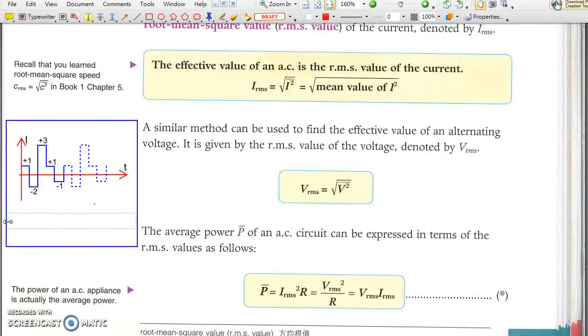The squares of current are positive 1, positive 4, positive 9, positive 1, and positive 1. And thus the average value of the squares of current is 3.2. If each current value lasts for one-fifth of a period, then the root mean square current is 1.79A.